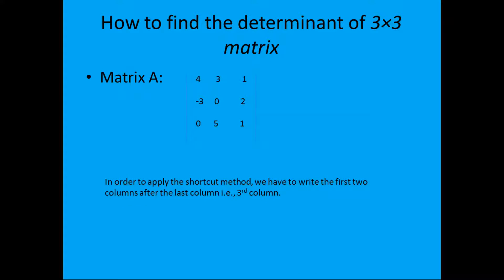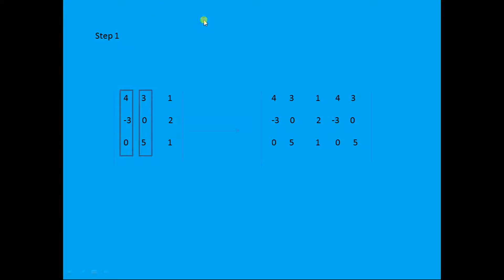In order to apply the shortcut method, we have to write the first two columns after the last column — that is, after the third column. So we write these two columns after the last one. You can see that these two columns have been added: this is the first column and this is the second column.